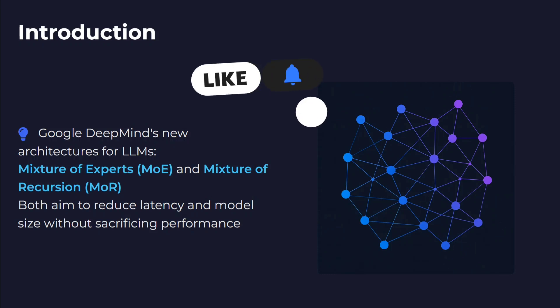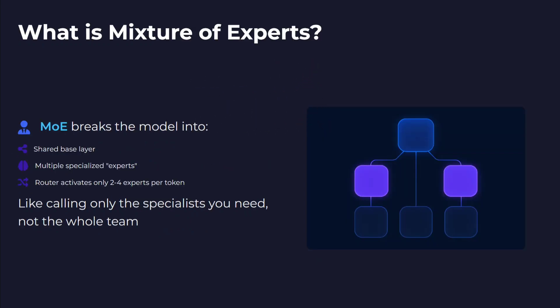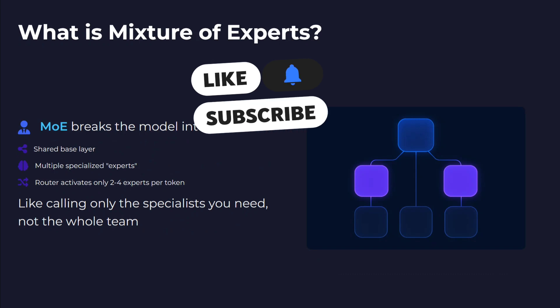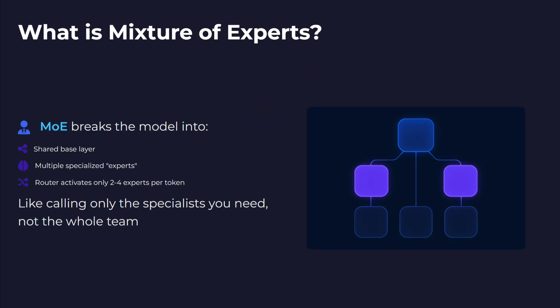The aim remains the same but how they do it is different. First, let's understand what Mixture of Experts (MoE) is. MoE breaks the model into a shared base layer with multiple specialized experts, and a router activates only two to four experts per token. At any given time, just certain sections of the model are activated — not the entire model — hence saving on memory and computation.